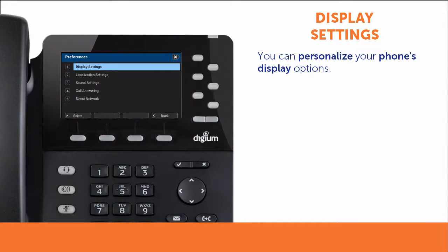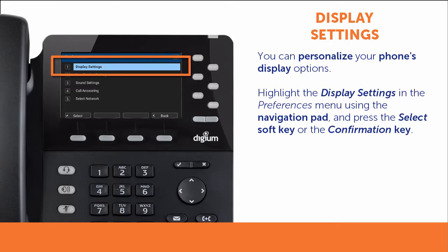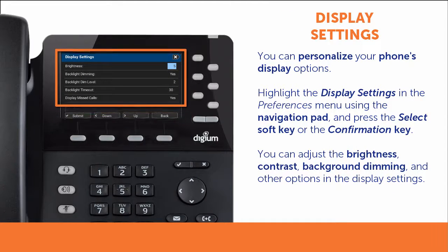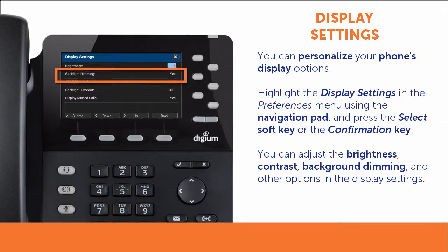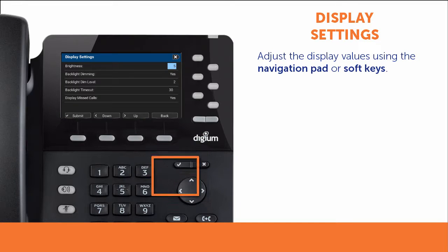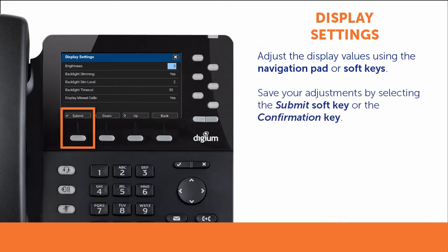You can personalize your phone's display options. Using the navigation pad, highlight Display Settings in the Preferences menu and choose the Select soft key or press the confirmation key on the phone. The display setting allows you to adjust brightness, contrast, background dimming, and other options. Using the navigation pad or soft keys, you can adjust the display values to your specifications. Select the Submit soft key or the confirmation key on the phone to save your adjustments and return to the Preferences menu.